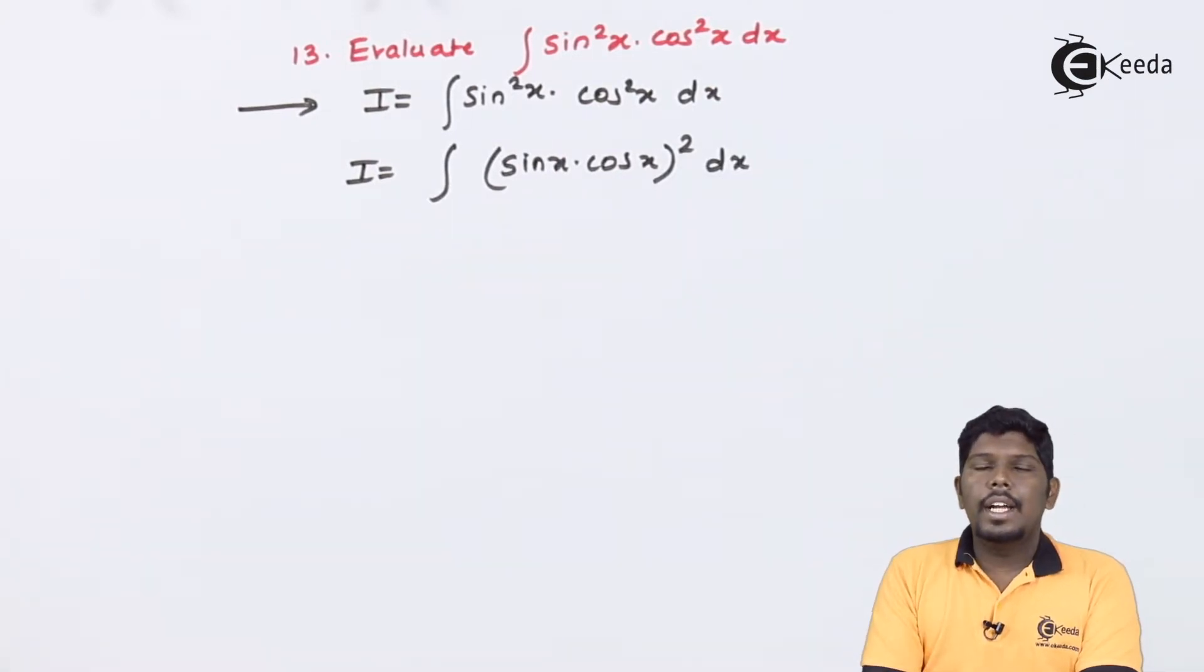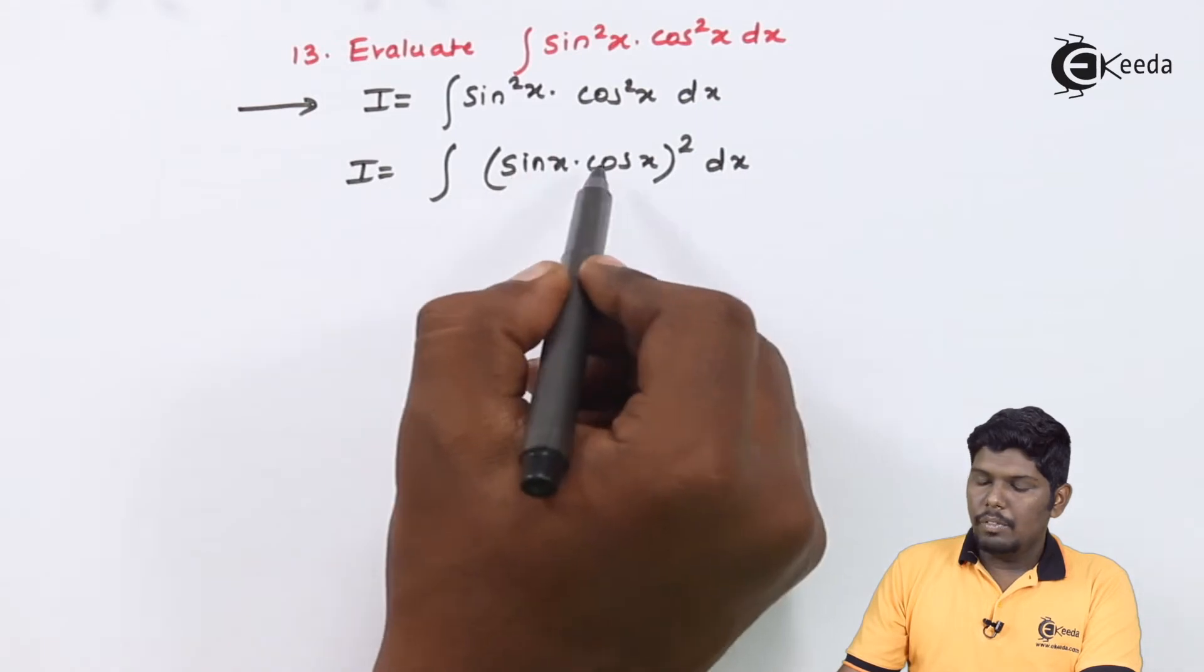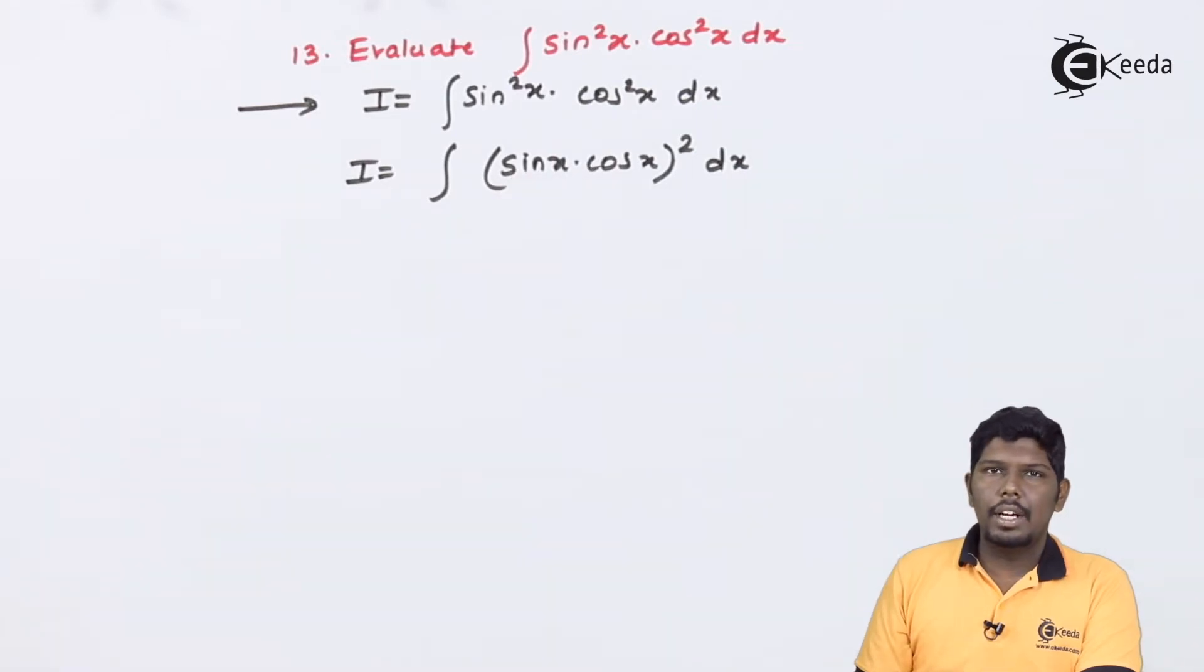Now whenever sin and cos are in the product and they are in numerator, you can go for the formula sin 2θ as two terms will be directly converted in a single term.